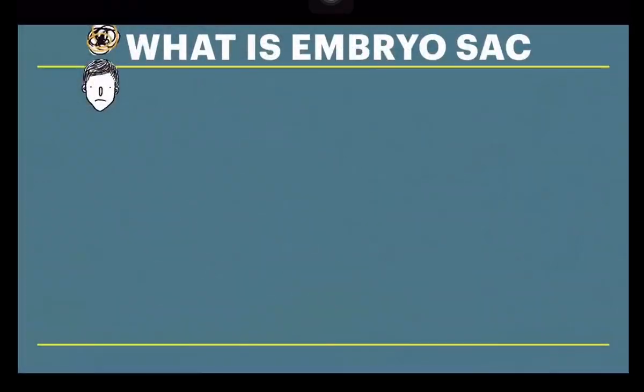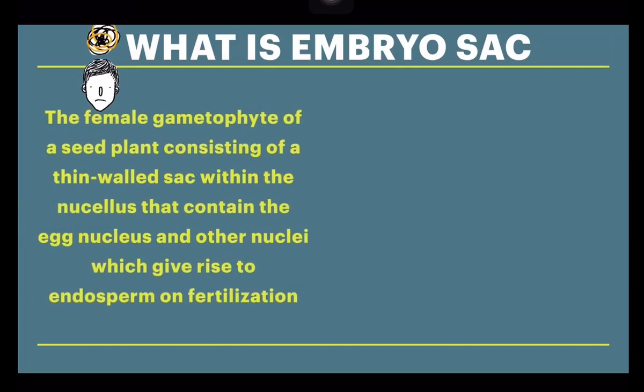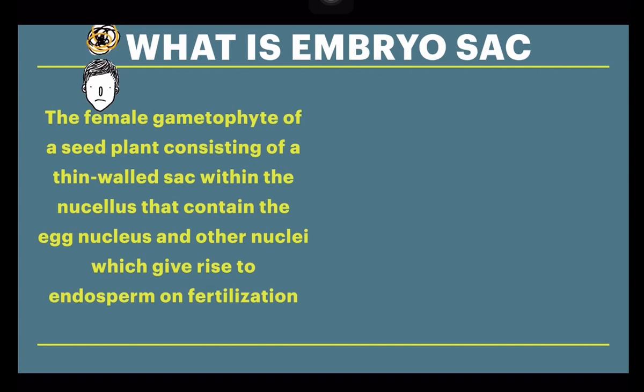What is embryo sac? The embryo sac is the female gametophyte of a seed plant, consisting of a thin-walled sac within the nucellus that contains eight nuclei and other nuclei which give rise to endosperm on fertilization.